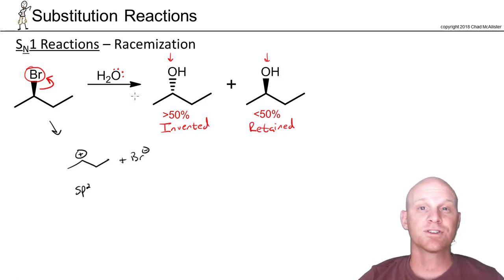So SN2 inversion takes place at a chiral center but SN1 racemization takes place at a chiral center.